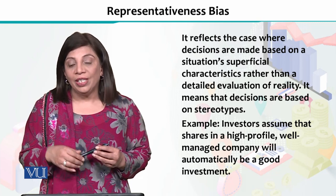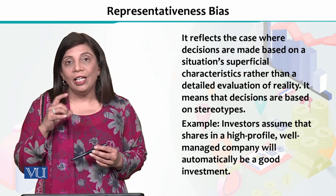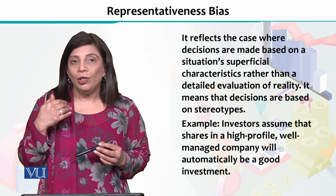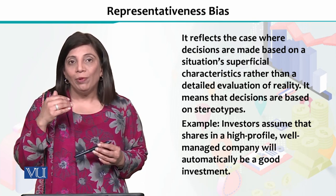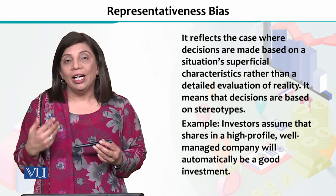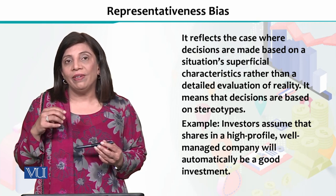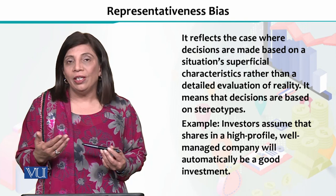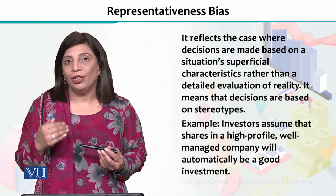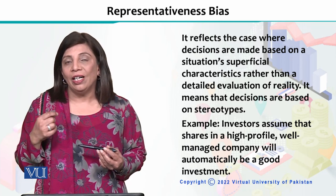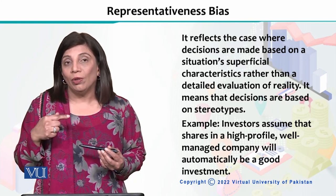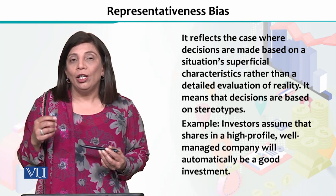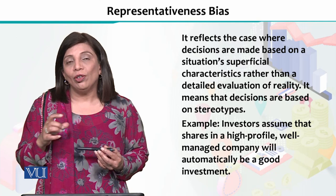The next important thing is representative bias. In representative bias, whatever you think is representing something, you take a decision on that basis, and that could also end up in taking a bad decision. You can take a better decision if you probe more information. But whatever was there representing the information about something — a stock, a share, or any financial instrument — you decided on that alone. That representative bias can also lead to bad decisions.